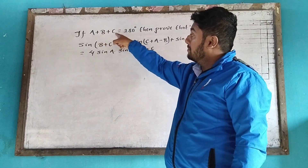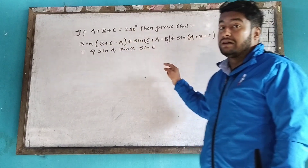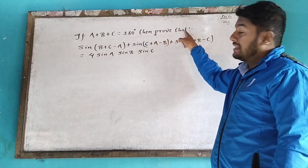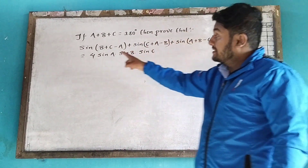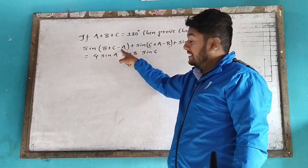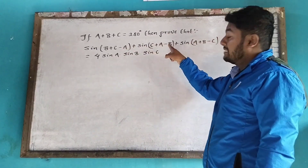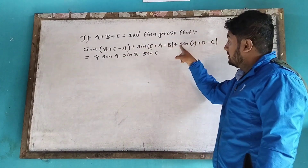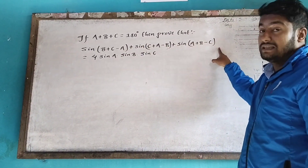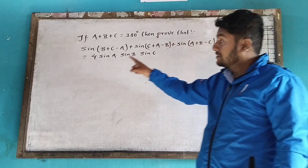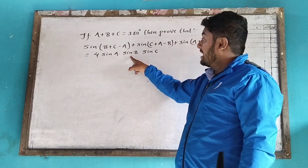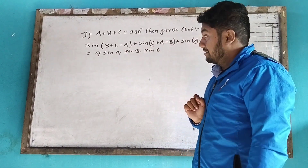If A plus B plus C is equal to 120 degrees, then prove that sin(B+C-A) plus sin(C+A-B) plus sin(A+B-C) is equal to 4·sin(A)·sin(B)·sin(C).